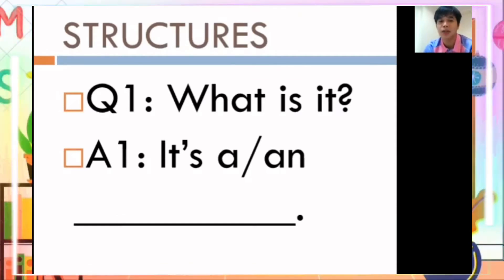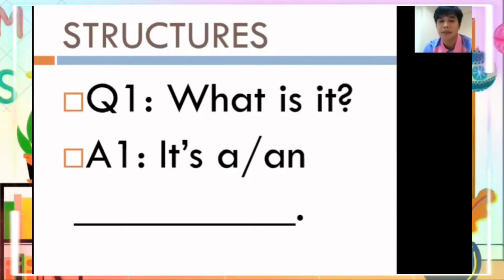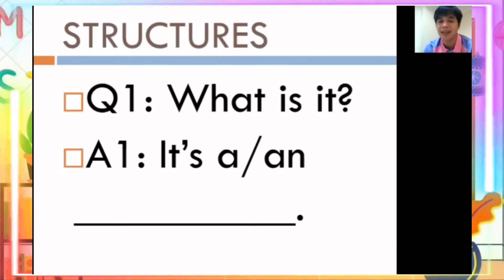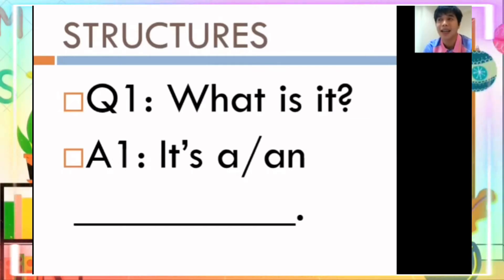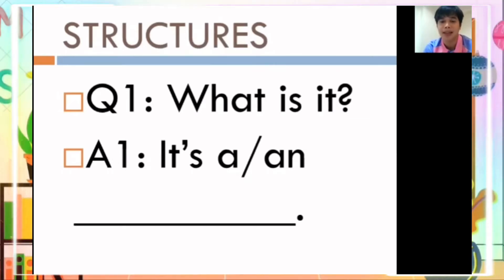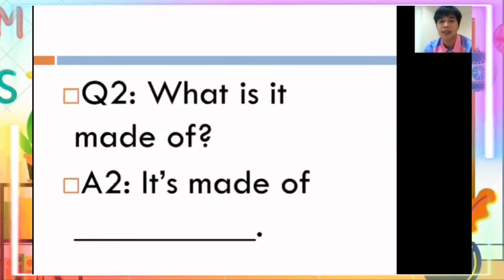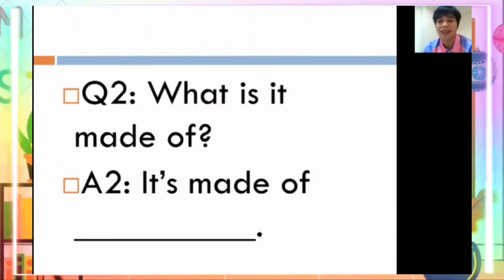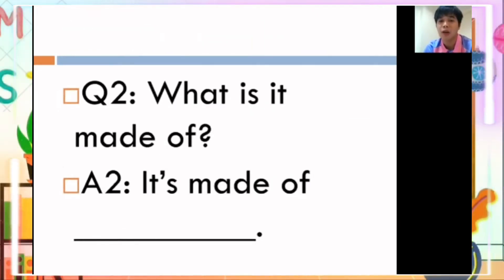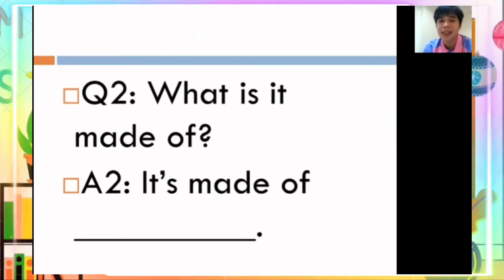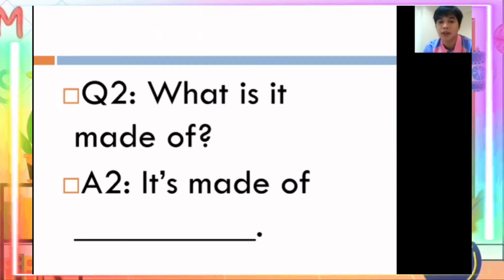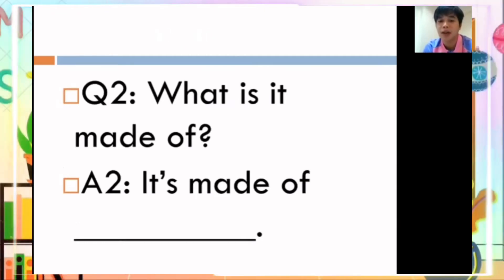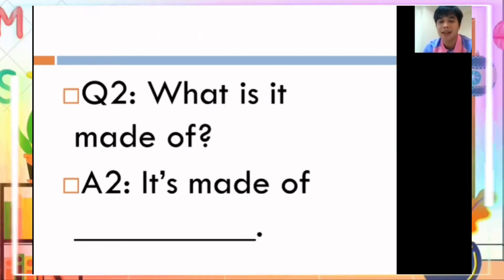For our sentence structures: number one — what is it? You are going to answer: it's a blank. Sentence structure number two — what is it made of? You are going to answer: it's made of blank.